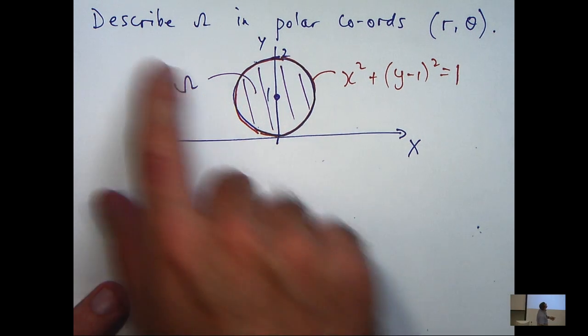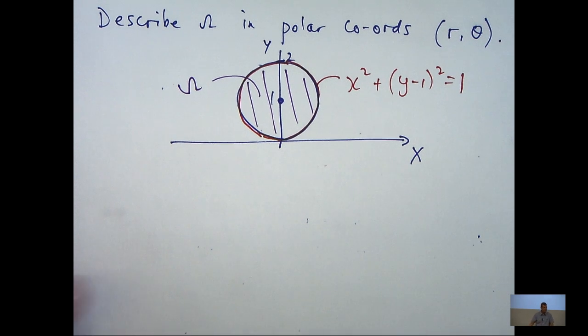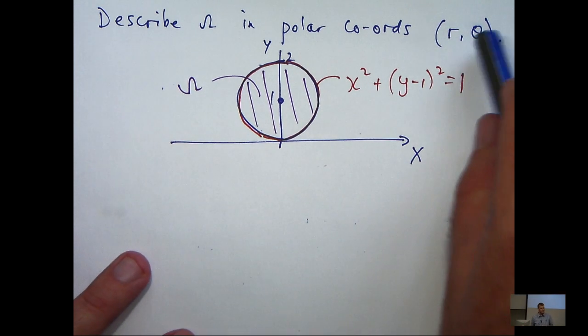So the challenge now, can we describe all these points in this disk using polar coordinates? Well, let's do the easy part first. Think of the angle.